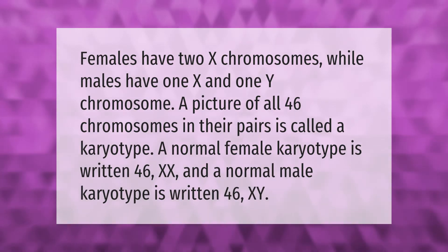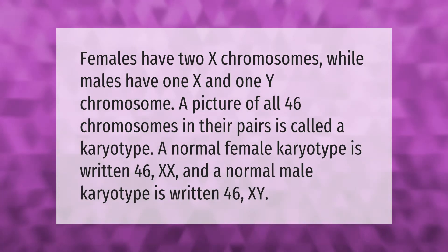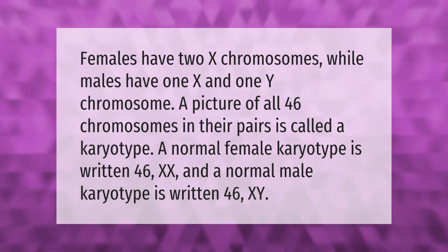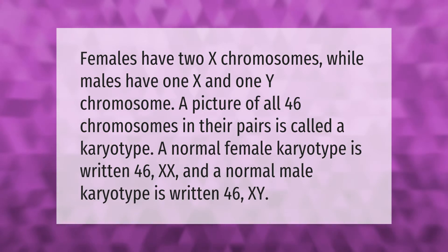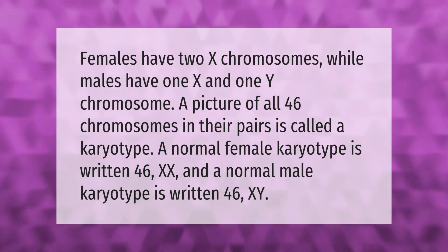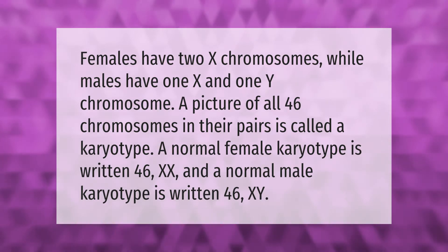Females have two X chromosomes while males have one X and one Y chromosome. A picture of all 46 chromosomes in their pairs is called a karyotype. A normal female karyotype is written 46,XX and a normal male karyotype is written 46,XY.